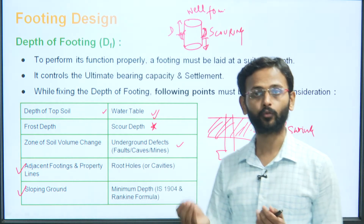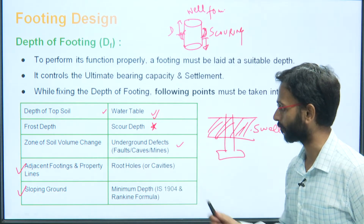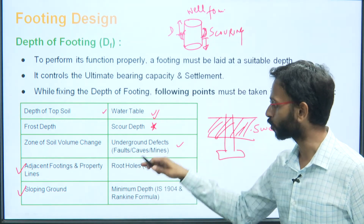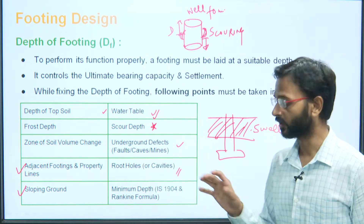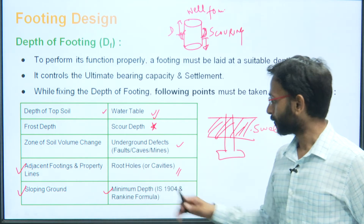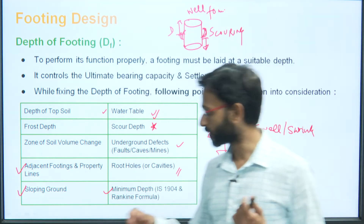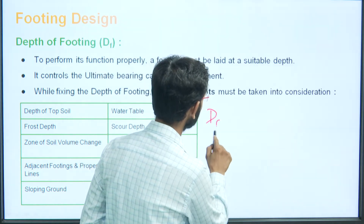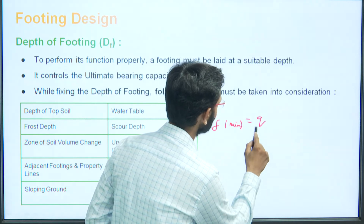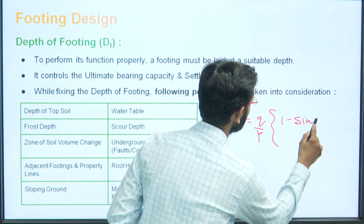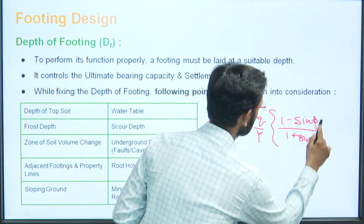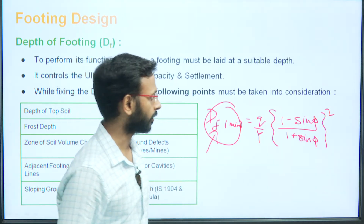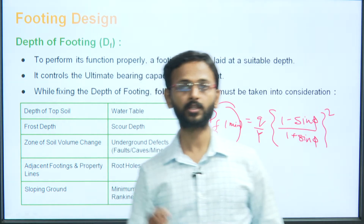Root holes or cavities, which are usually found due to burrowing animals such as rats, are weak points in the soil that we have to consider. Next is the Rankine depth — from the Rankine formula, the minimum depth of the footing is: Df_minimum = (q/γ) × ((1 − sin φ)/(1 + sin φ))². This minimum depth of the footing should always be provided, determined by q, γ, and the internal friction angle φ.